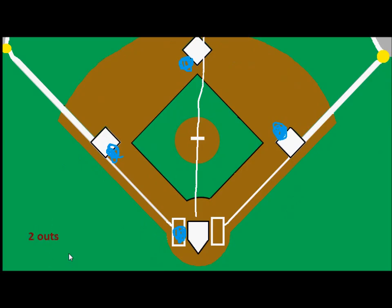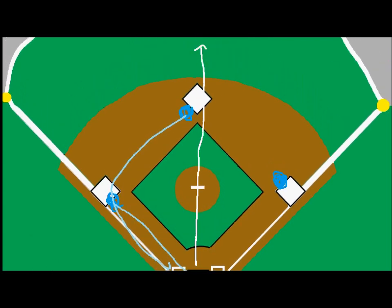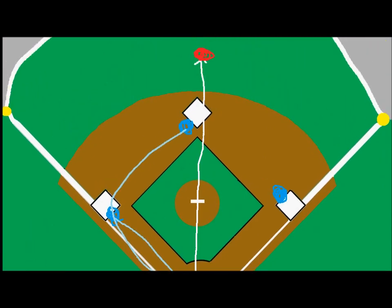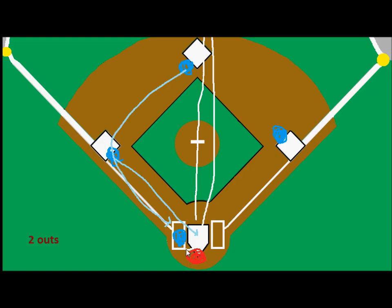With two outs, all the runners are moving right away. The runner on third base runs home and scores, no problem. The runner on second base runs, touches third, rounds it, and is coming home. While that's happening, the center fielder picks up the ball and throws it in to the catcher.